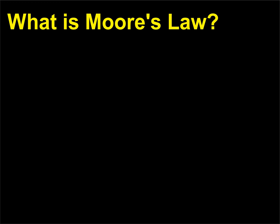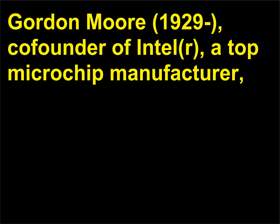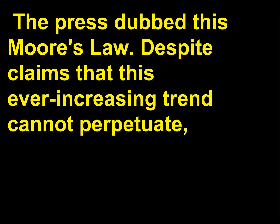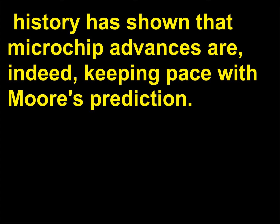What is Moore's law? Gordon Moore, 1929, co-founder of Intel, a top microchip manufacturer, observed in 1965 that the number of transistors per microchip and hence a chip's processing power would double about every year and a half. The press dubbed this Moore's law. Despite claims that this ever-increasing trend cannot perpetuate, history has shown that microchip advances are indeed keeping pace with Moore's prediction.